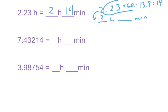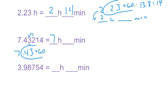On a quiz or homework they come out nicely, but in practice sometimes the decimal goes on forever, like 7.43214. If this happens, just go to the hundredths place — so 7.43. You know you have 7 hours, then take the .43 times 60, and you get 25.8 minutes, which rounds to 26 minutes.